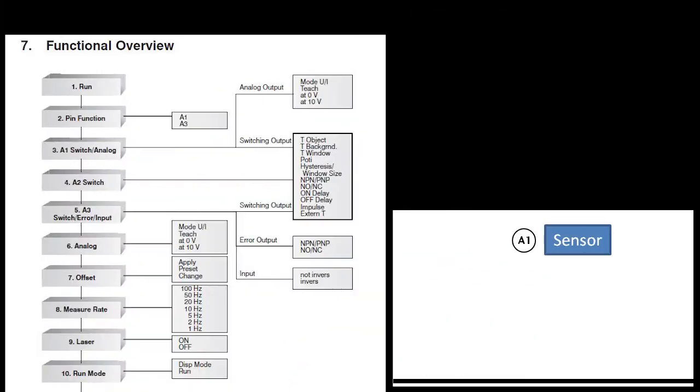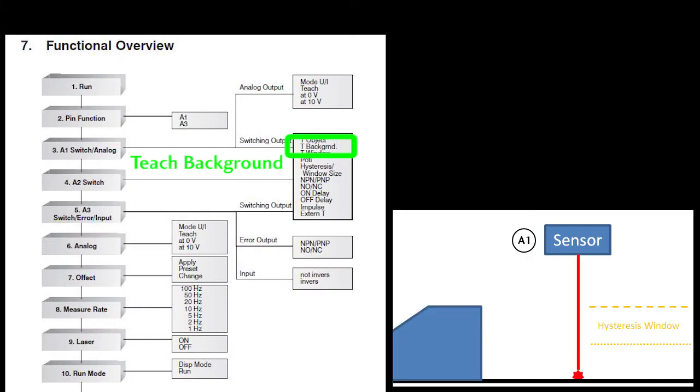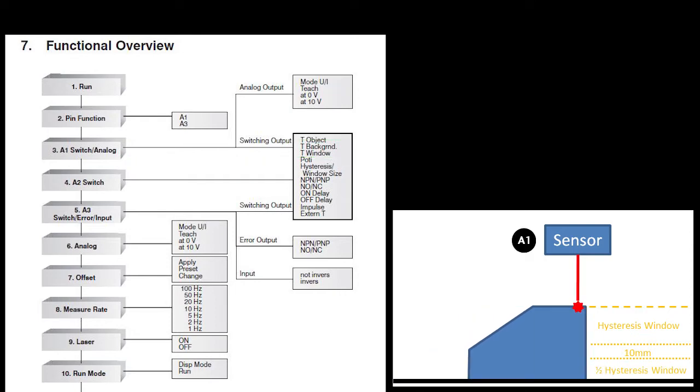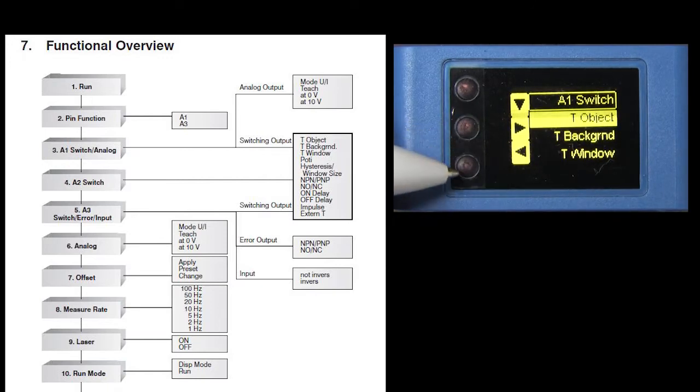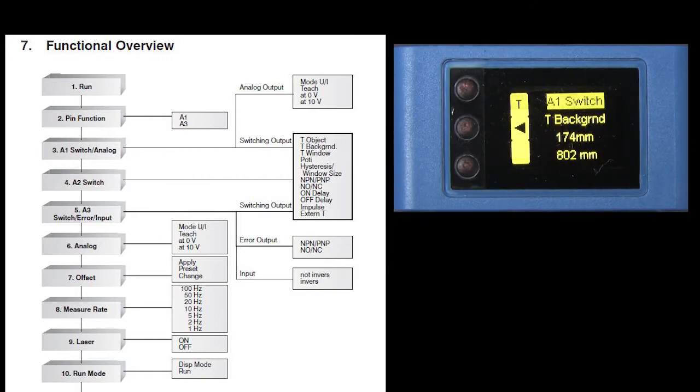This T background menu is very similar except you learn the background and anything that is larger than a hysteresis plus 10mm plus another half hysteresis will be detected and the signal won't be released until it has fallen back below the hysteresis level. To set that up, you just enter the menu item, make sure there are no objects in front of the line of sight and hit T. The sensor calibrates and you are ready to go.